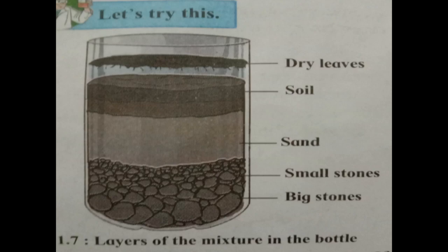How does the mixture in the bottle look? Do we see layers in it? What is seen in the different layers from top to bottom? See the figure of the layers of the mixture in the bottle. We had experimented and left it, so see what we observed.